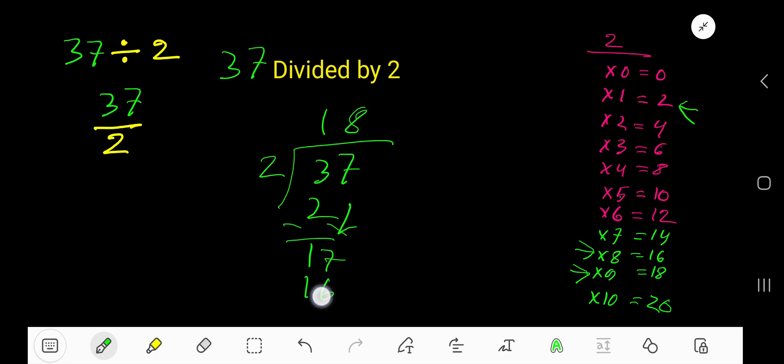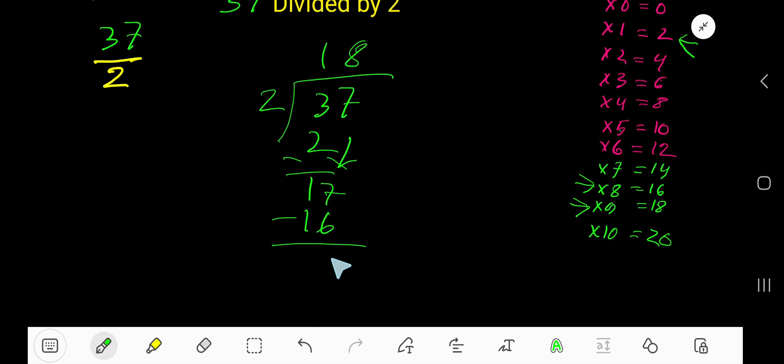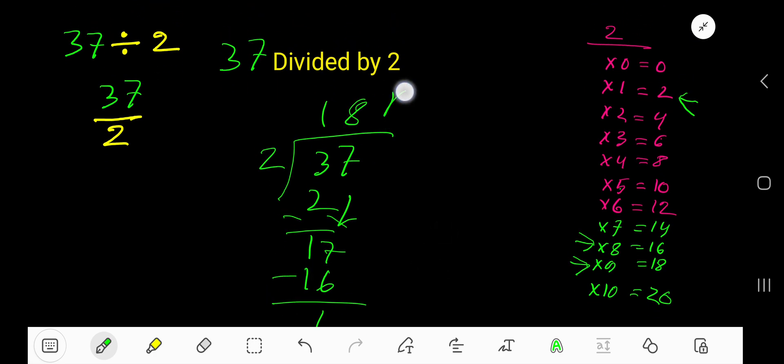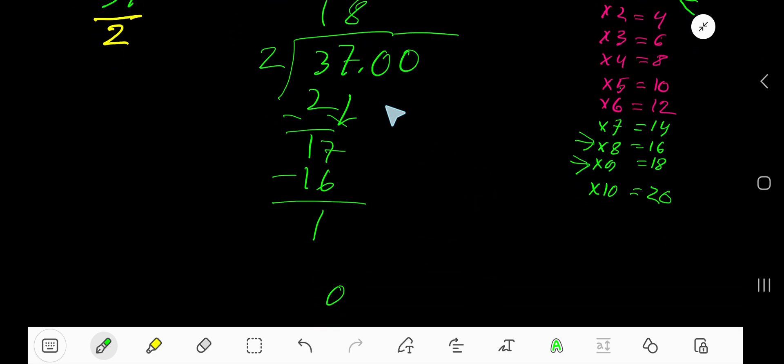Subtract 16, we are getting 1. So your answer is 18 remainder 1. Or if you want to convert your answer into decimal, then take here a decimal point and you are allowed to take any number of zeros. So bring